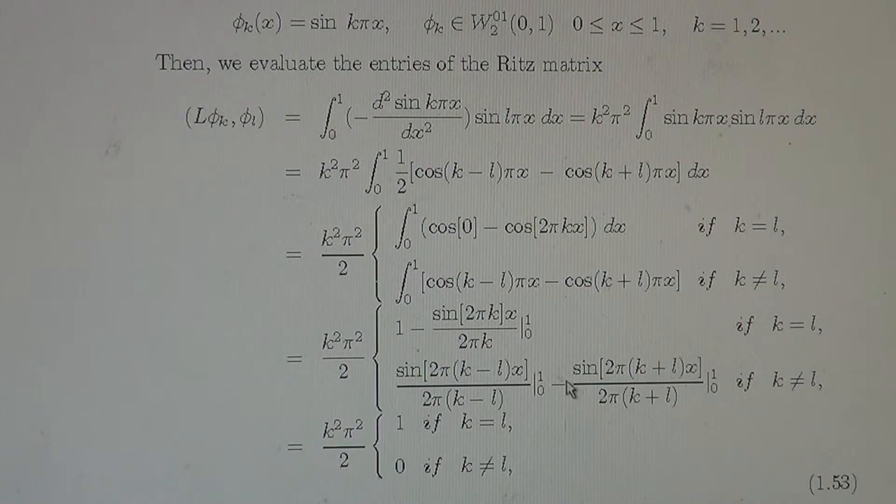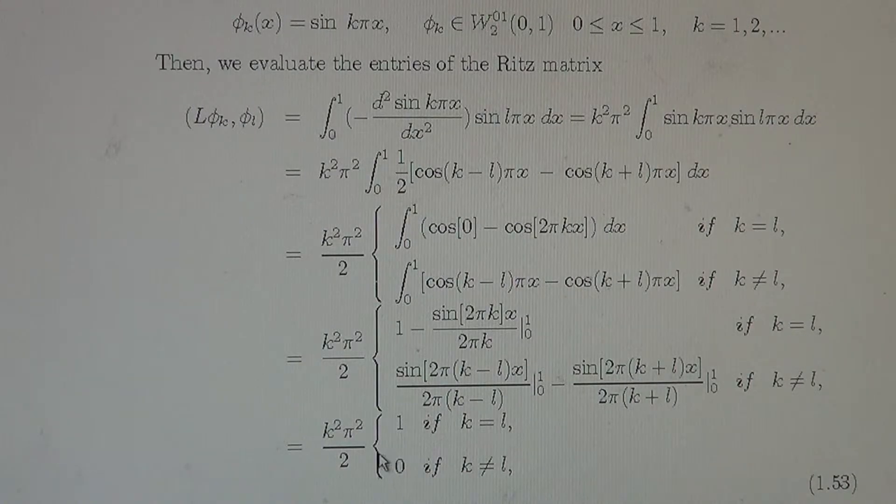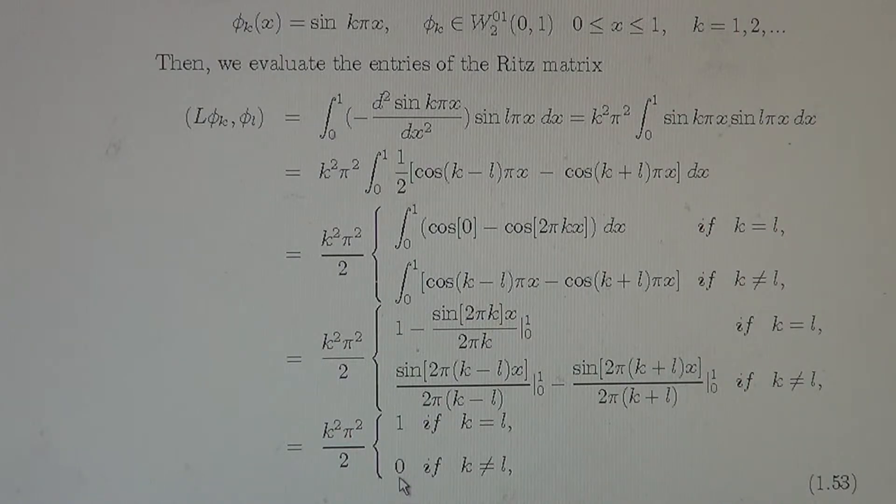this is well definite because k is not L, and the same we have integral of this here. Now we observe that in the limits of integration from 0 to 1, that all these three sines are 0. So we come to the entries of the Ritz matrix, k square pi square over 2 times 1, if k equals L, if 0, if not equal L, k different than L. So the matrix, the Ritz matrix is in fact diagonal matrix.